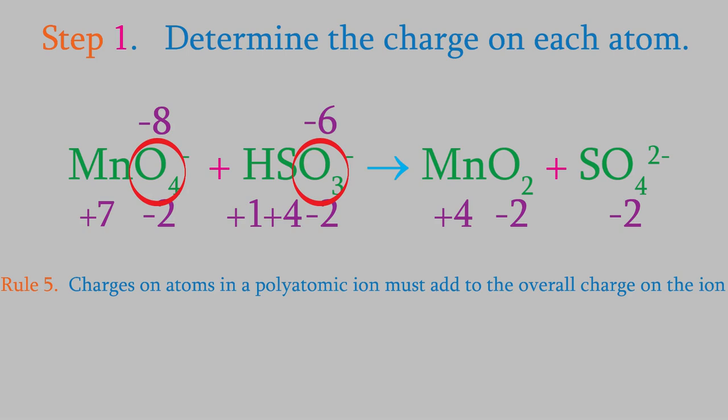Finally, the sulfate contains 4 oxygens, so these have a total charge of minus 8. And the overall charge on the sulfate ion is negative 2. That means the sulfur must have a charge of plus 6.